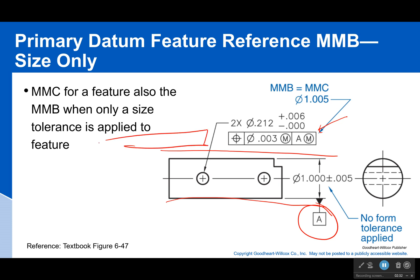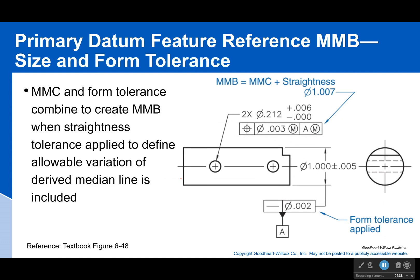However, here you see that I have applied a straightness tolerance to my axis — or in this case the derived median line of this feature. This has changed things. Our max material boundary is no longer the same as the max material condition, because we also have our straightness tolerance applied to an axis.